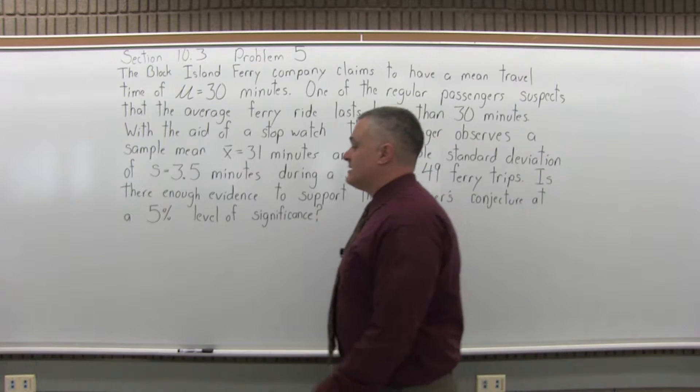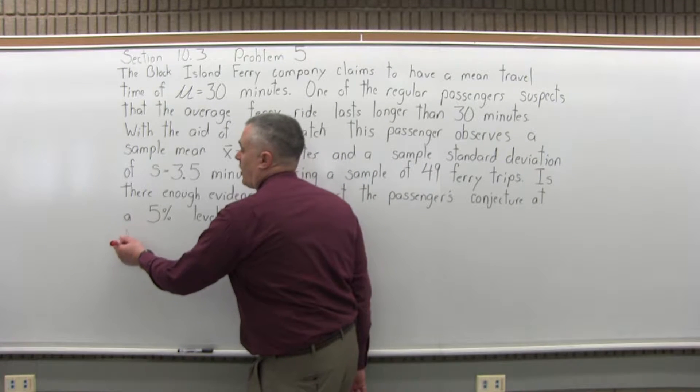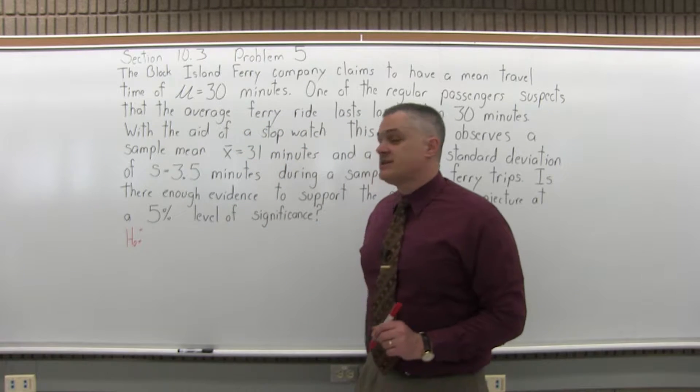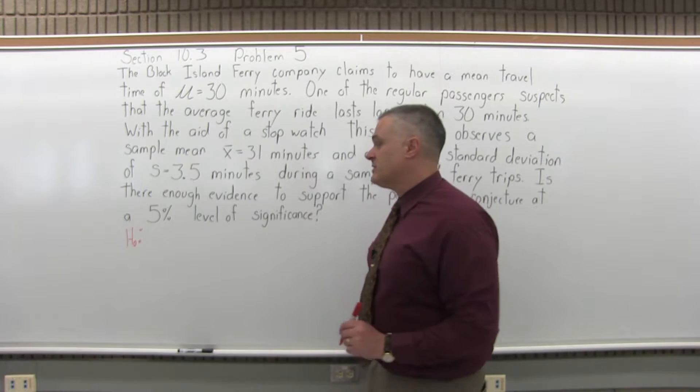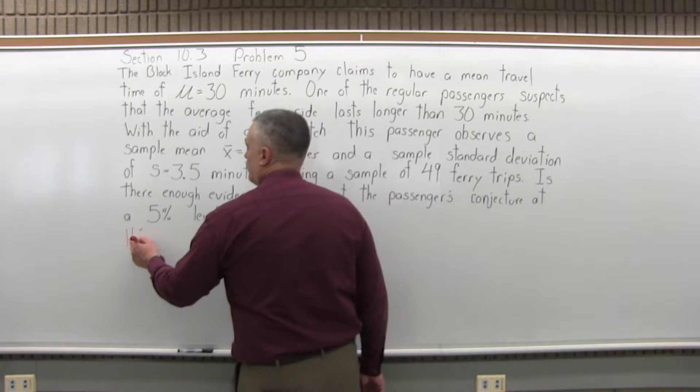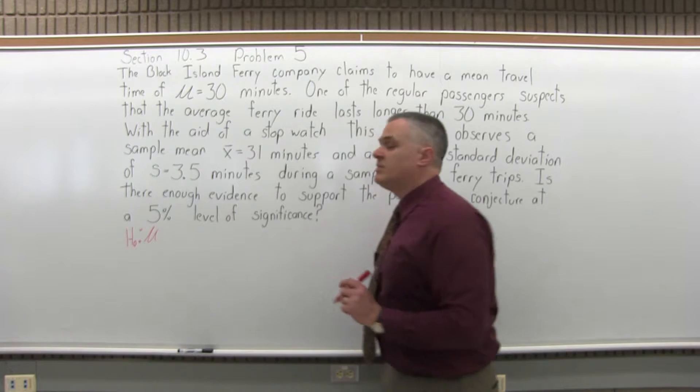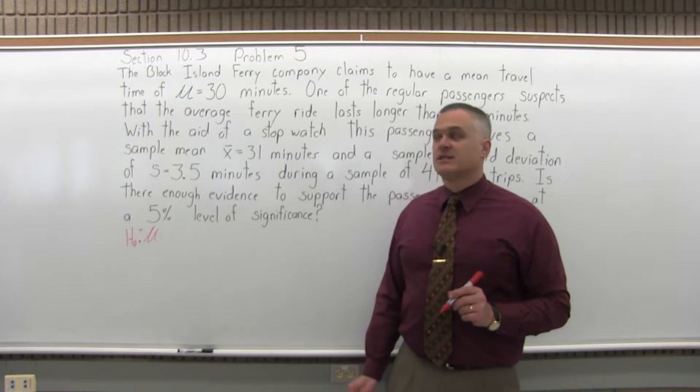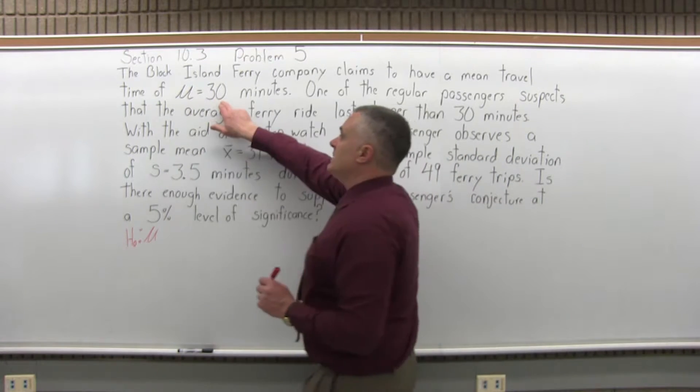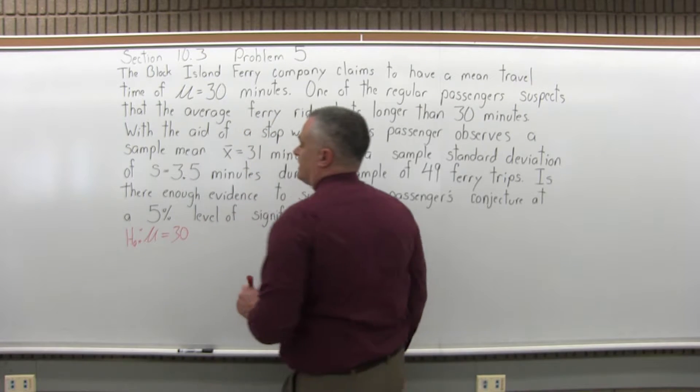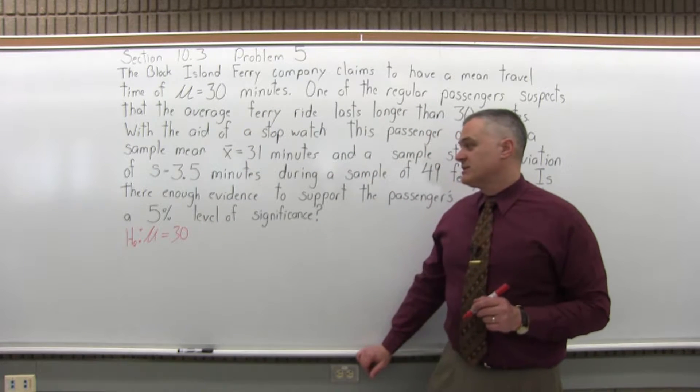So this is a hypothesis test. Step 1, state the null hypothesis. The symbol for null hypothesis is a capital H with a subscript of 0. You put a colon, you put μ. You're going to have a number in some condition of equality—it could be equal to, greater than or equal to, or less than or equal to. In this case, it would be equal to 30. That's step 1: null hypothesis, μ = 30.